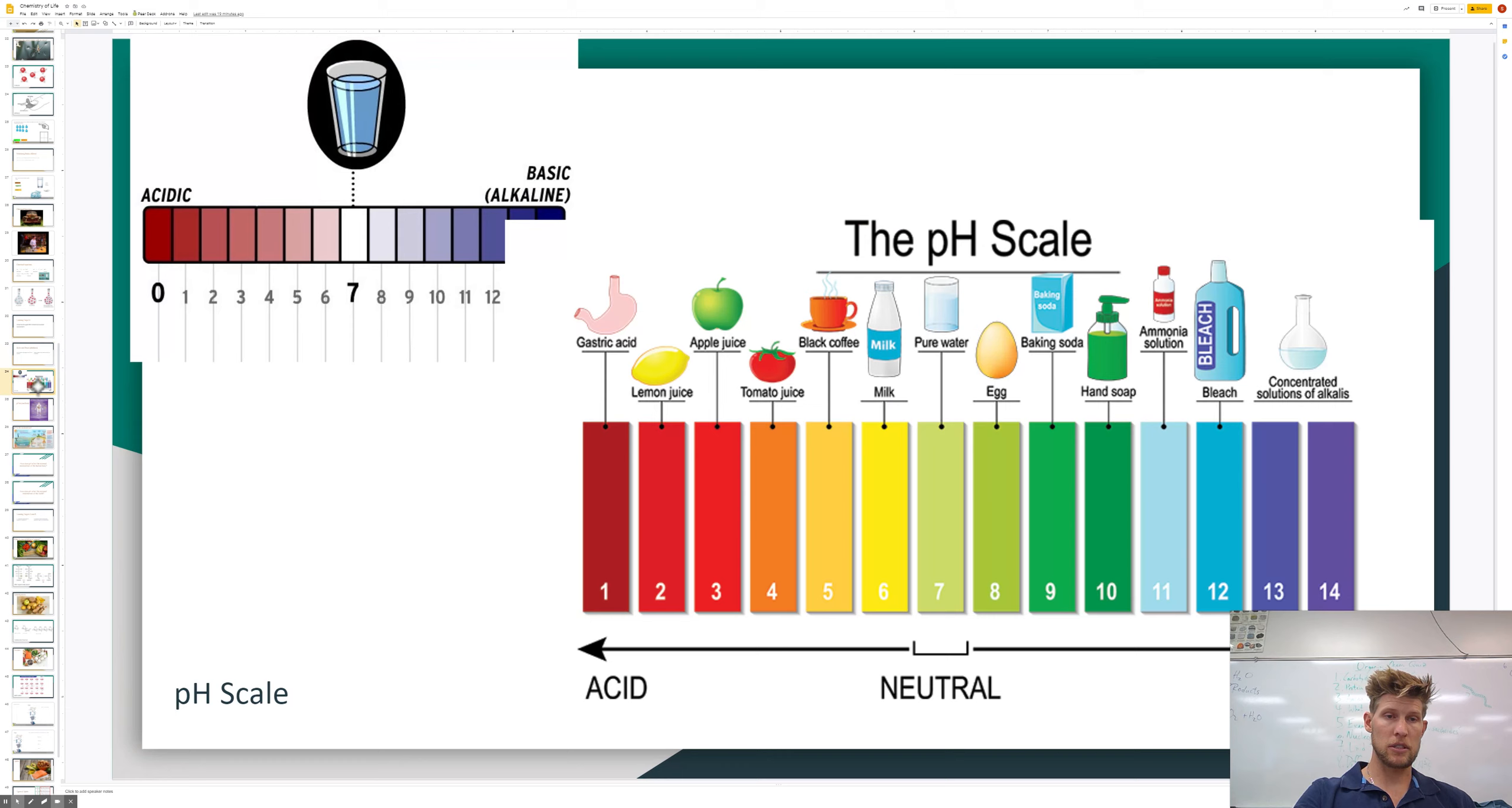Now here's this pH scale. Here's the one you have in your book right here. So seven is neutral. Make sure you're writing this down. Seven is neutral. Anything above seven is basic. Anything below seven is acidic. You need to know that.